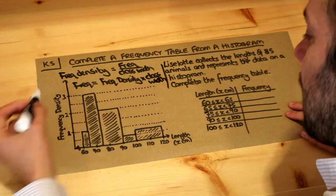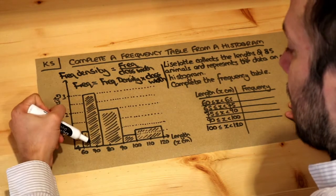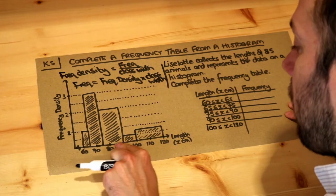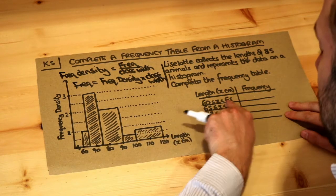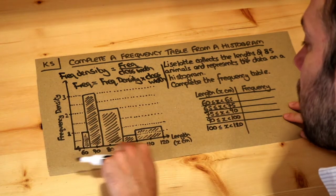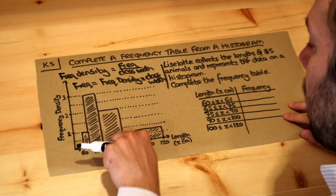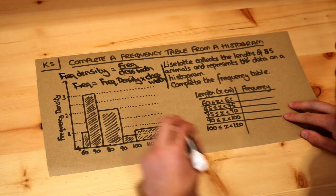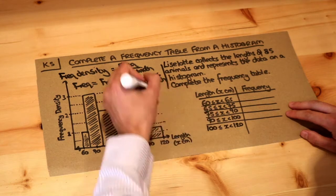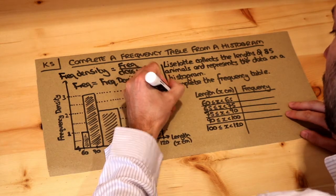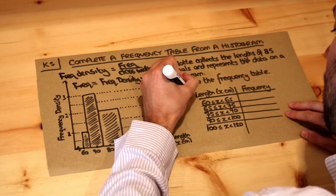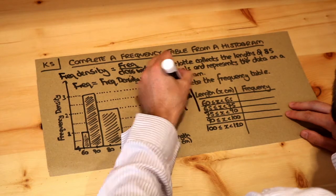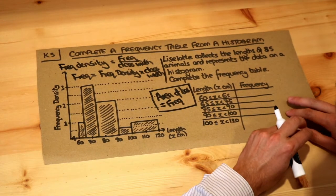If you think about it, frequency density is the y-axis, the height of the bar, and the class width is the width of the bar. If we do the height times the width of a particular rectangle, we know that gives you the area of the rectangle. So the key point in this video is that the area of the bar in the histogram equals the frequency that's represented by that bar.